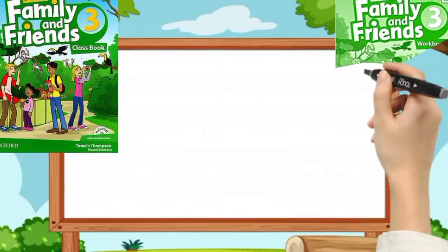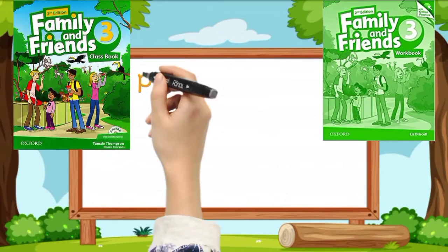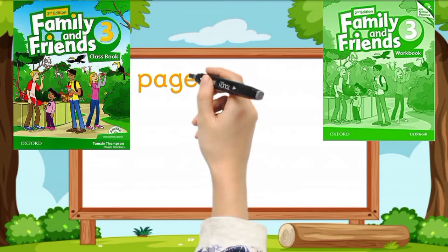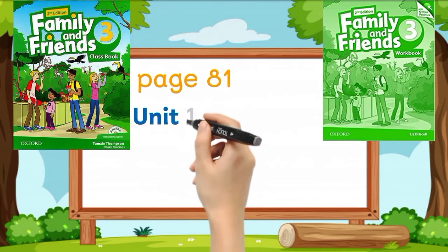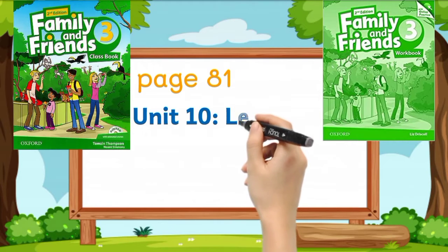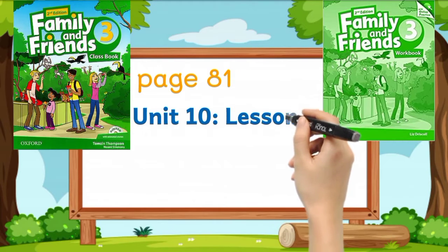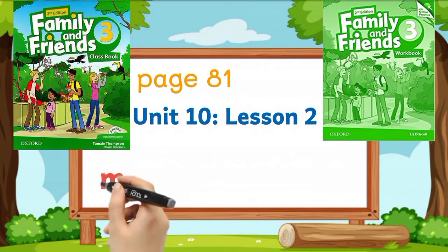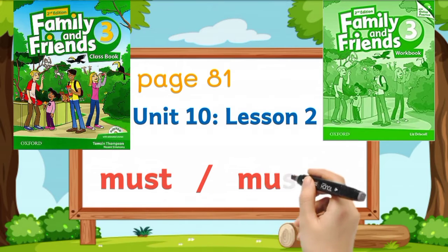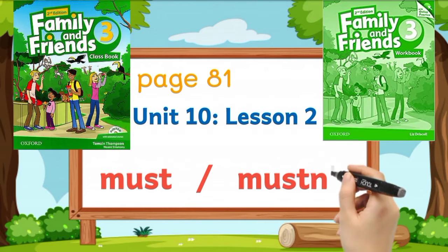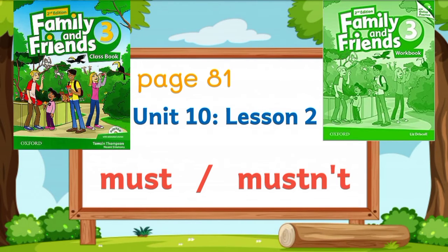Open your student book and workbook to page 81. We are now in Unit 10, Lesson 2. We are going to discuss modal verbs: must and mustn't. So let's start.